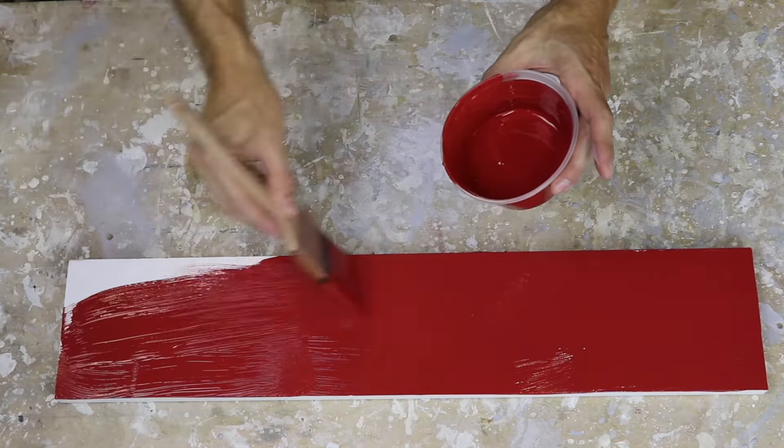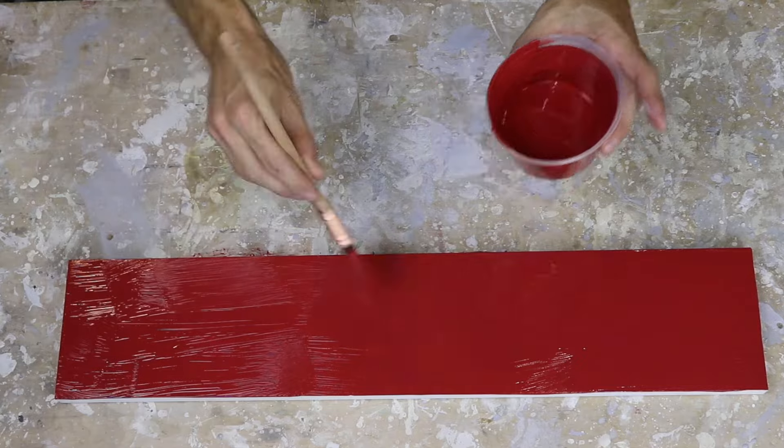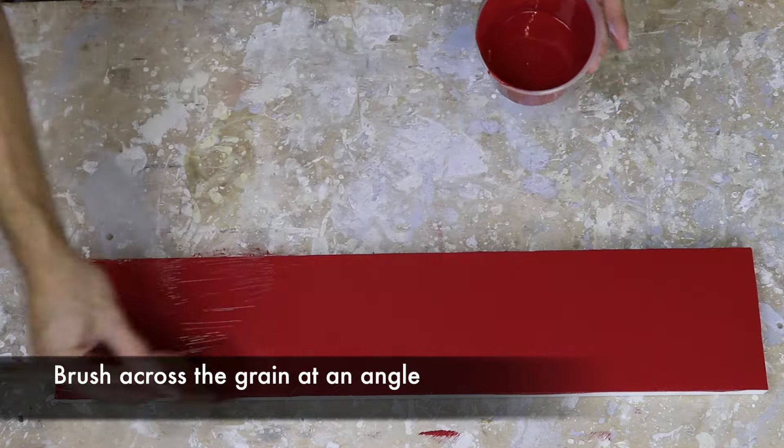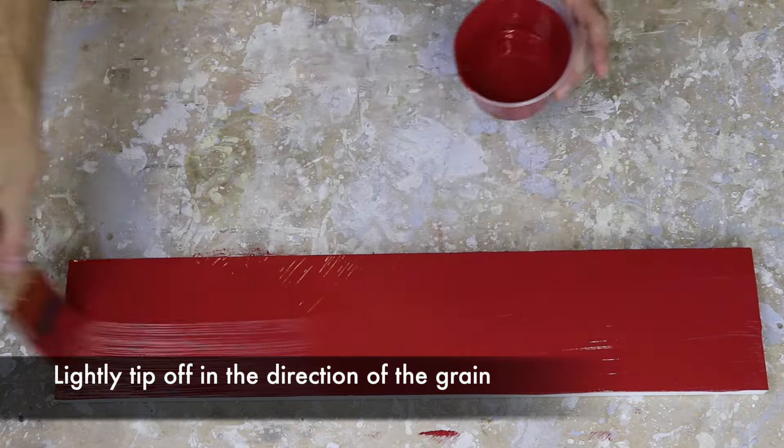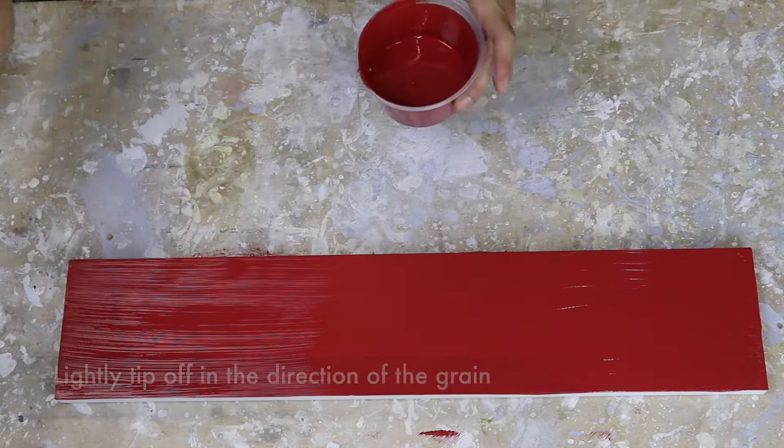Once I've got the whole surface coated, I come back and pull the brush at a 45 degree angle, and then lightly, very lightly tip off in the direction of the grain.